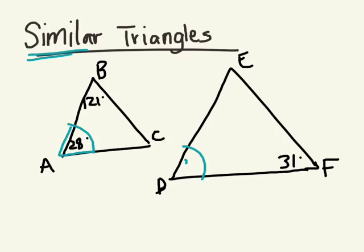So if this is 28, this has to be 28. If angle B is 121 degrees, then which angle would be 121? Good. So this would have to be 121 degrees.